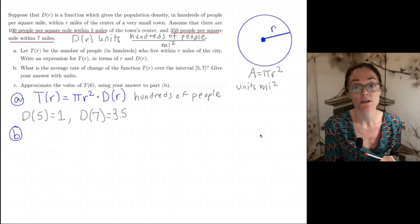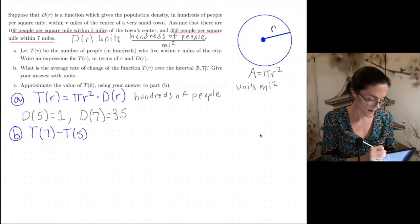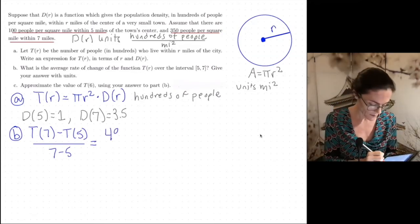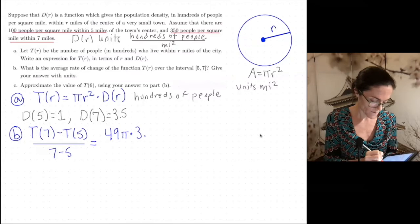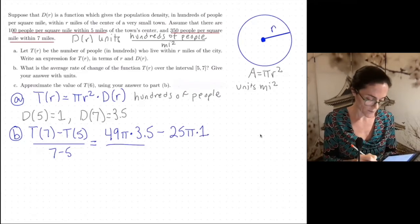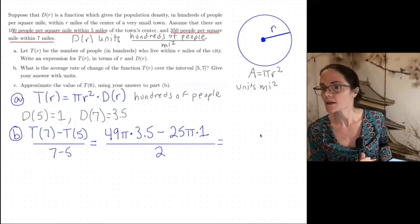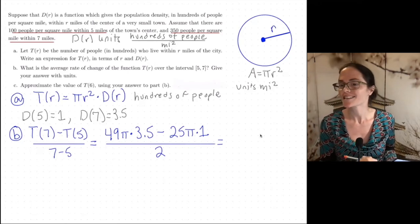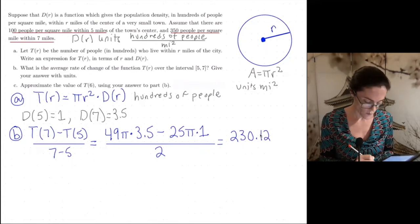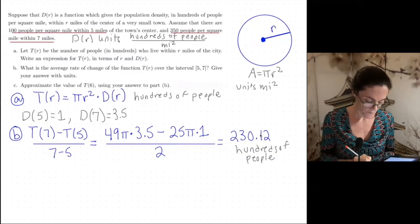Average rate of change from the interval 5 to 7. We want T(7) minus T(5) divided by 7 minus 5. Well, T(7) is 49π times 3.5. And T(5) is 25π times 1. And then we divide by 2. When you use a calculator, let me see what I get. 230.12. This would be in hundreds of people